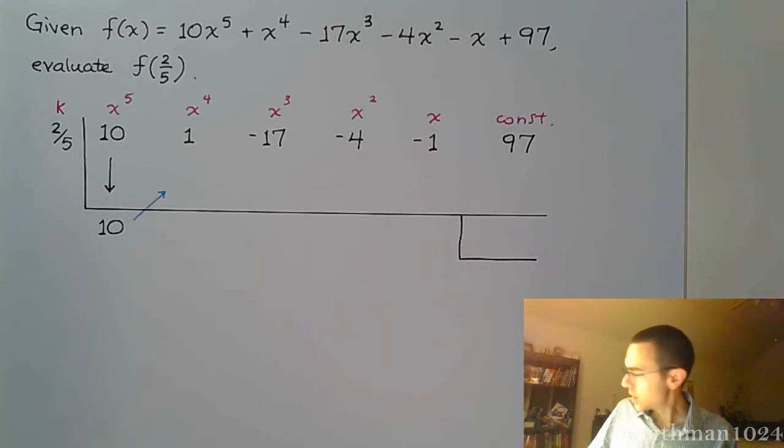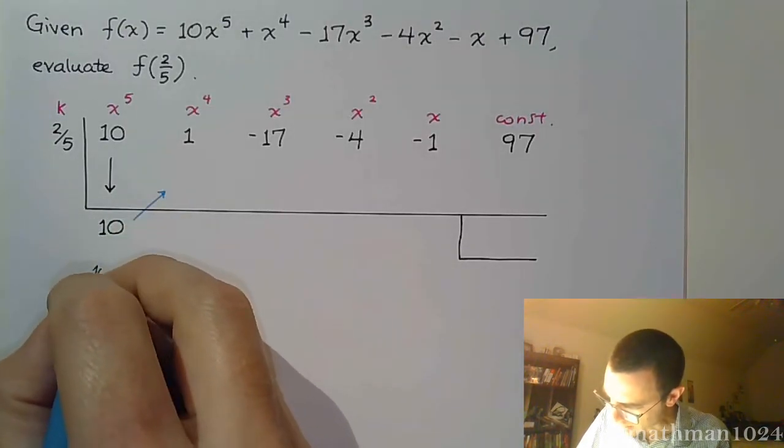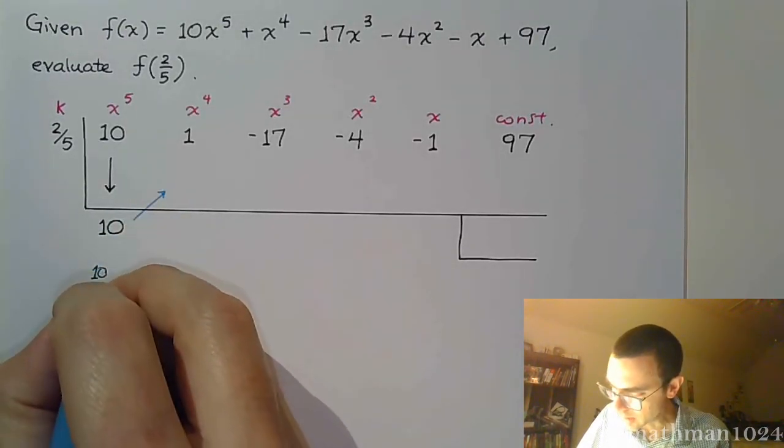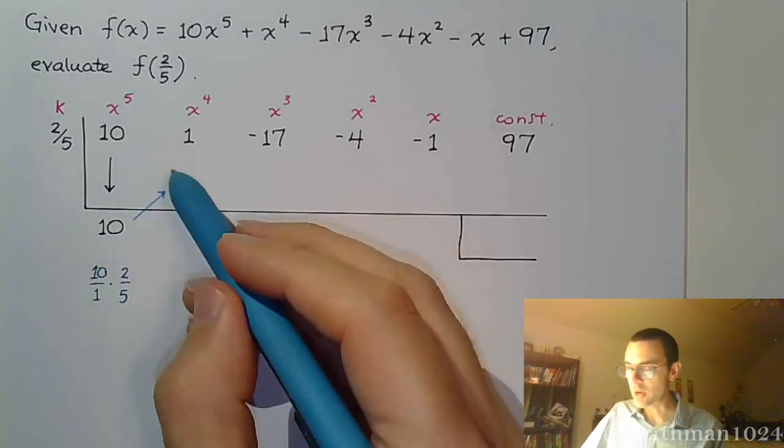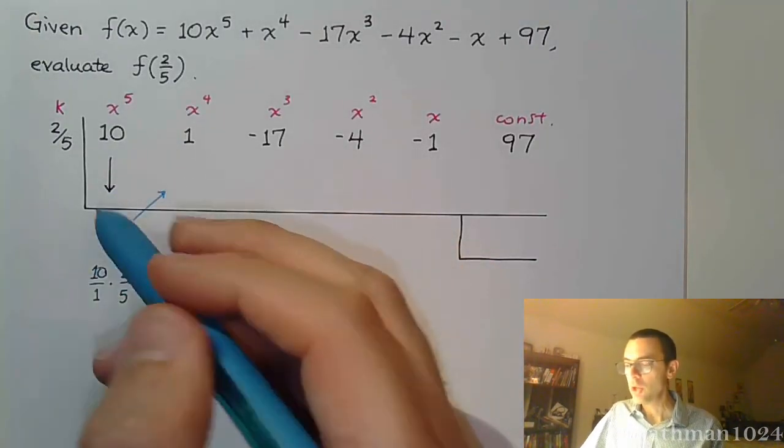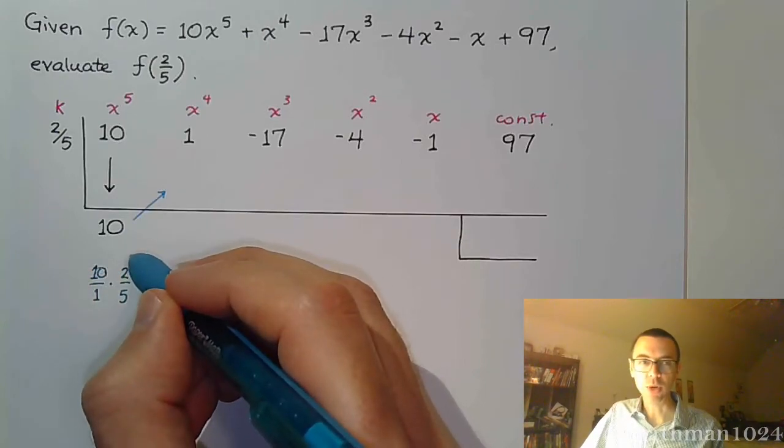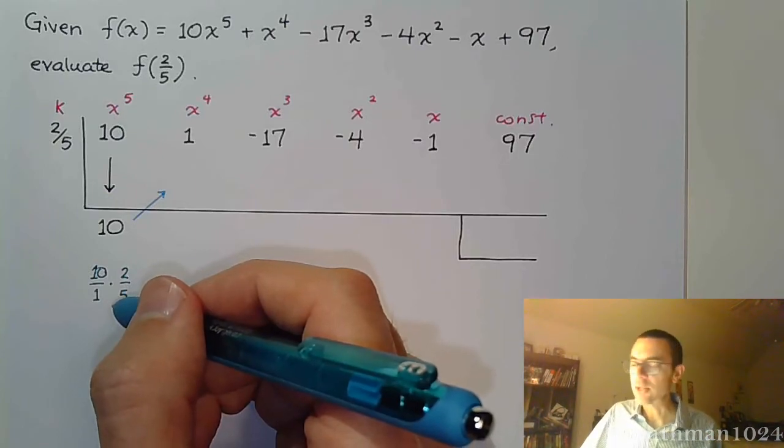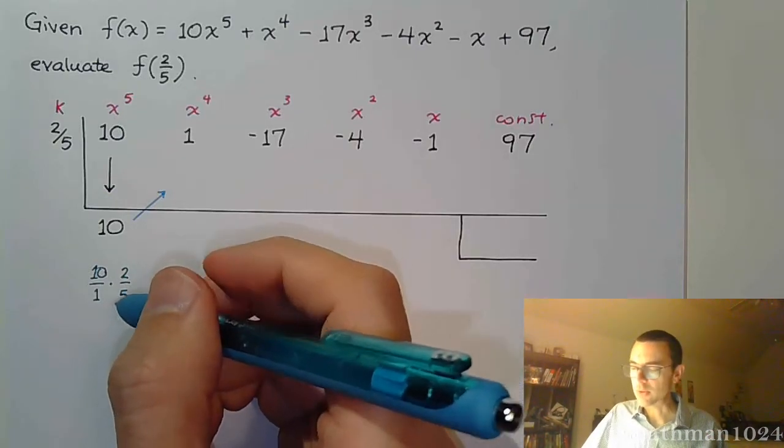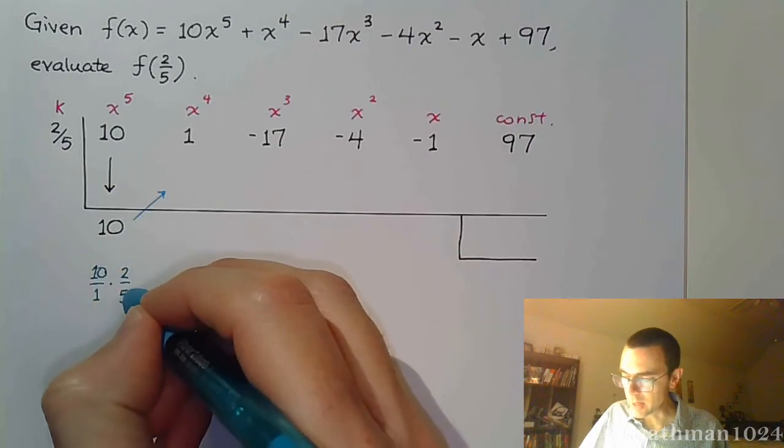Understand this, you're taking 10, and let's make that 10 over 1, and you're multiplying that times 2 over 5. Okay, that's what's going on to get the number up here. You can multiply straight across and get 20 and divide by 5, or to keep from having larger numbers that are a bit unnecessary, do the division part first.